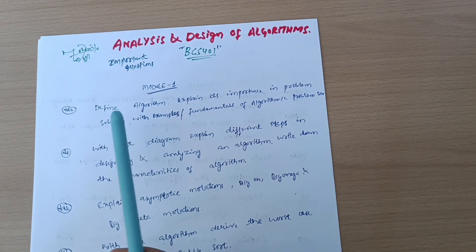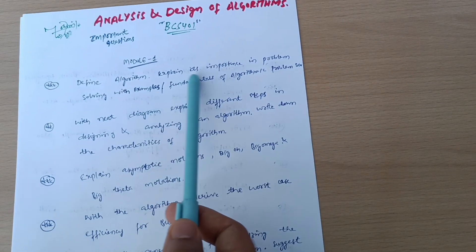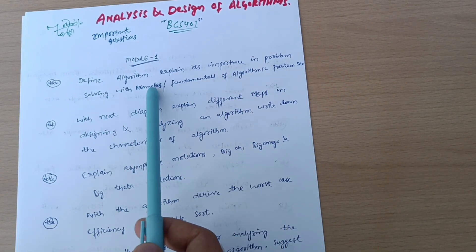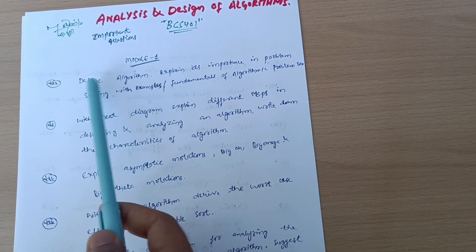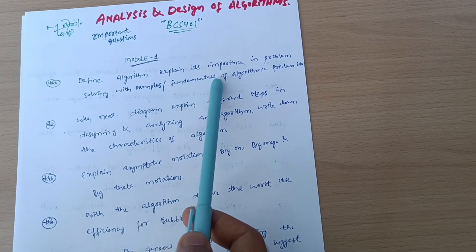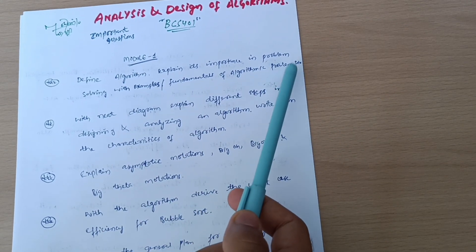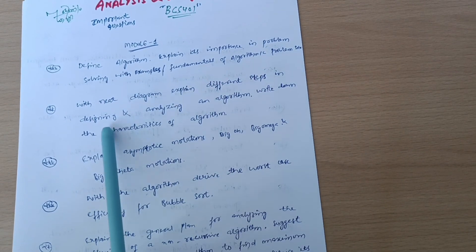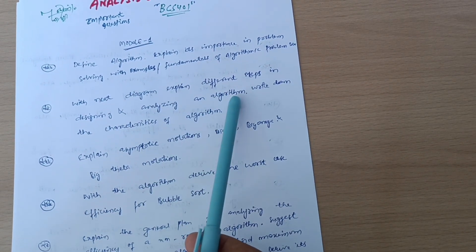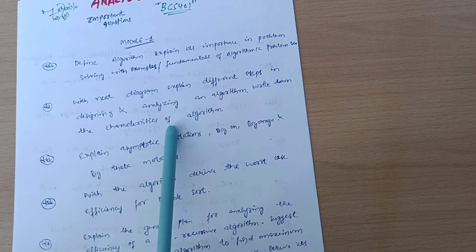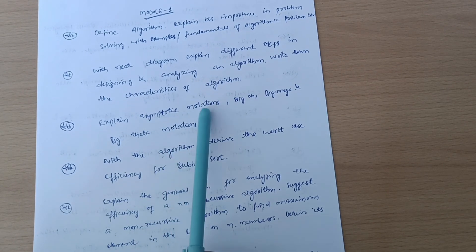First, let's discuss module-wise questions. Module 1: Define algorithm, explain its importance in problem solving with examples, or they will simply ask you to define algorithm and write down the fundamentals of algorithmic problem solving. Next, with neat diagram explain different steps in designing and analyzing an algorithm. Write down the characteristics of algorithm.